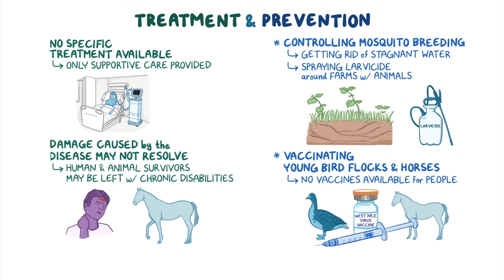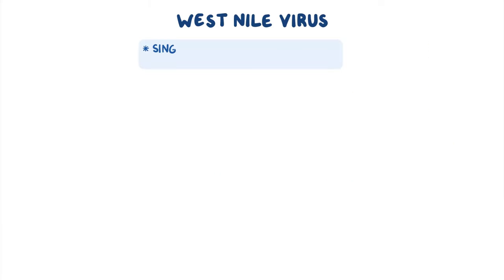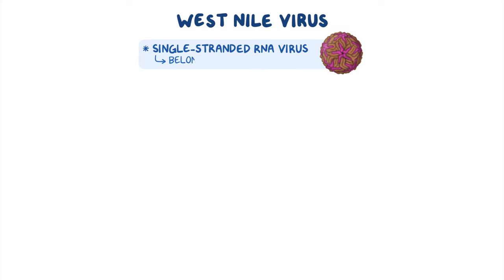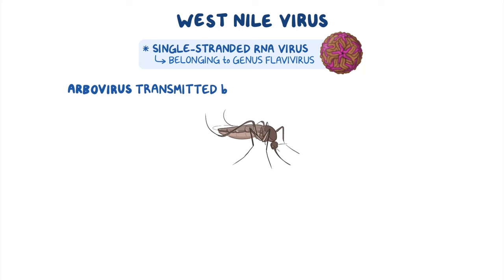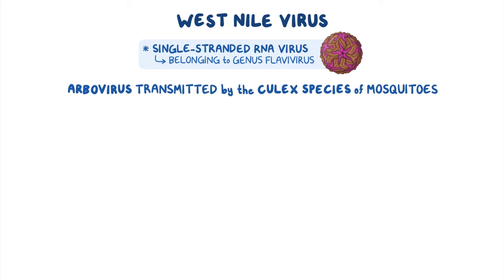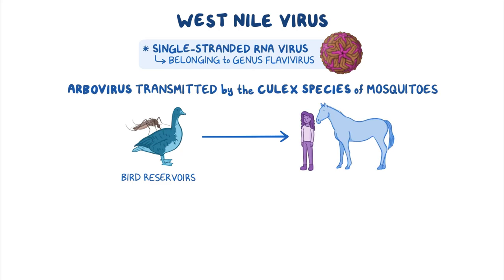As a quick recap: West Nile virus is a single-stranded RNA virus that belongs to the genus Flavivirus. It's an arbovirus transmitted by the Culex species of mosquitoes that spread the virus from bird reservoirs to other species like horses and humans, which are dead-end hosts.